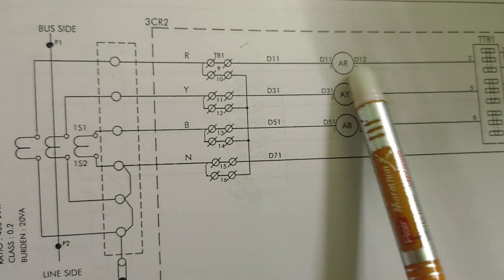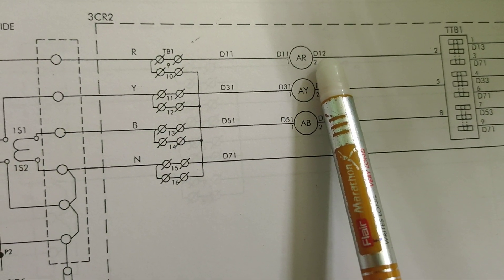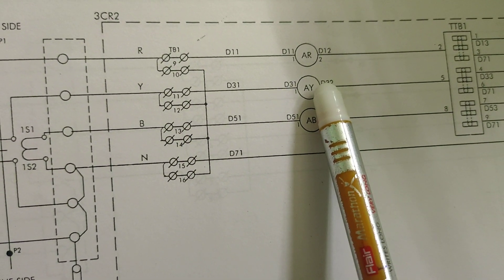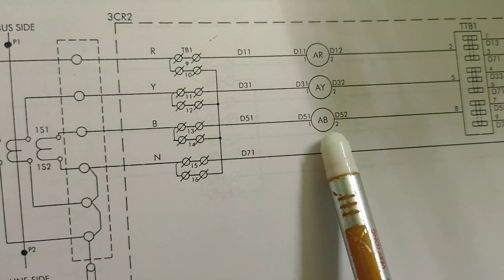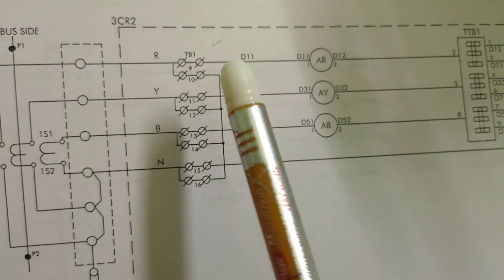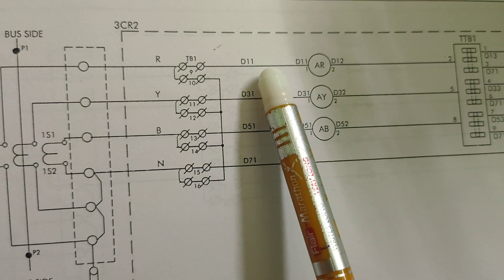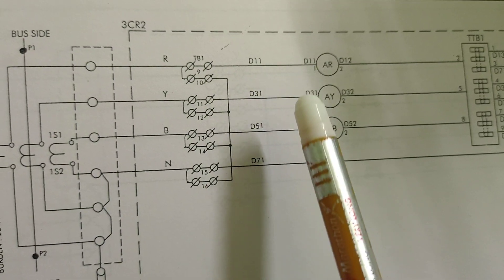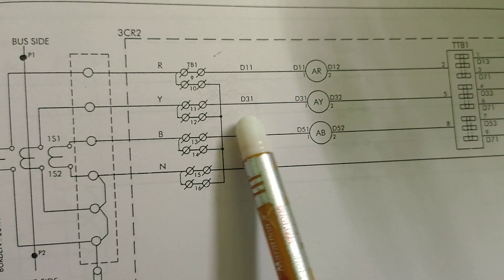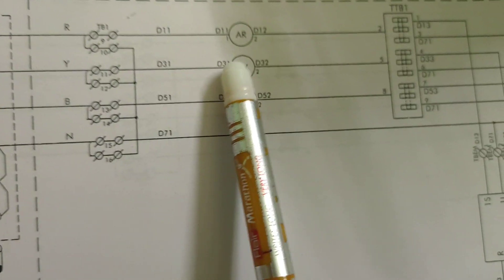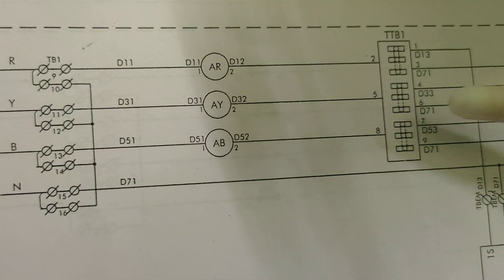From the TB, it goes through the ammeter. AR denotes the red phase ammeter, AY denotes the Y phase ammeter, and AB denotes the B phase ammeter. For core 1 metering use, the ferrule numbers used are D11, D31, D51, and D71. These go to the TTB — the test terminal block.